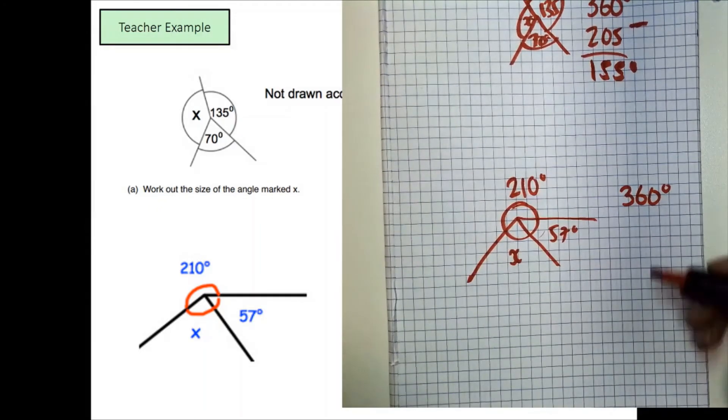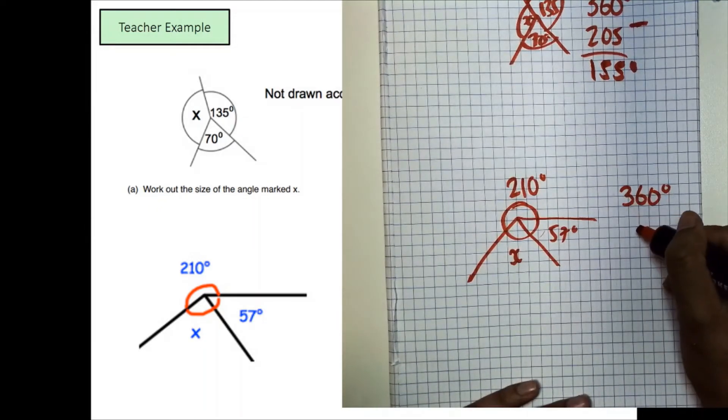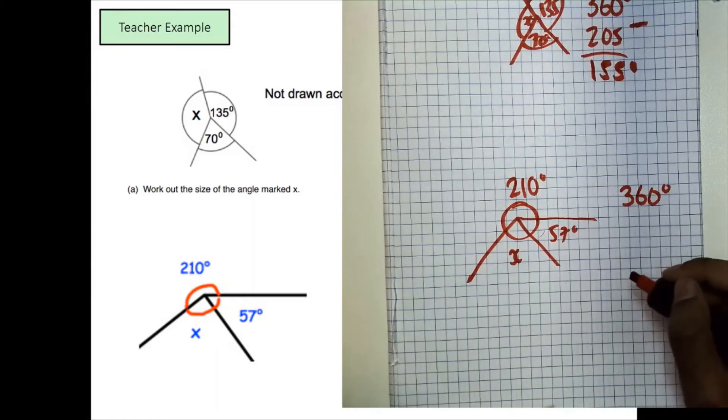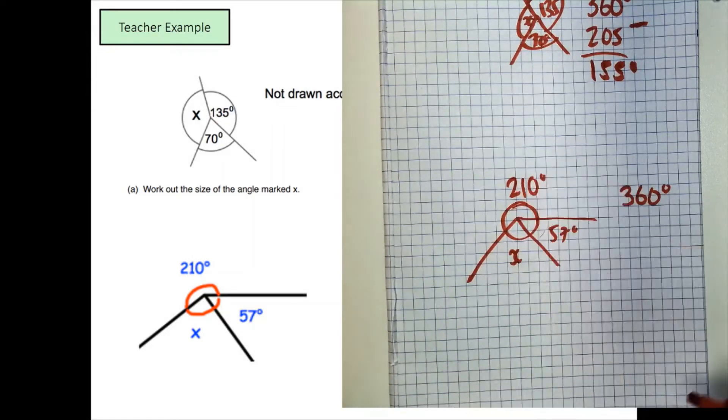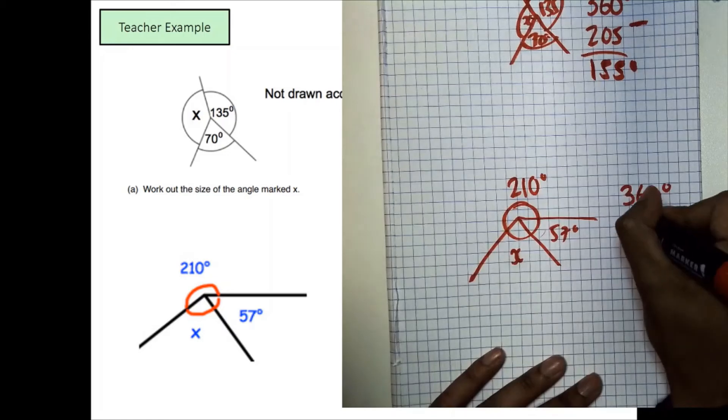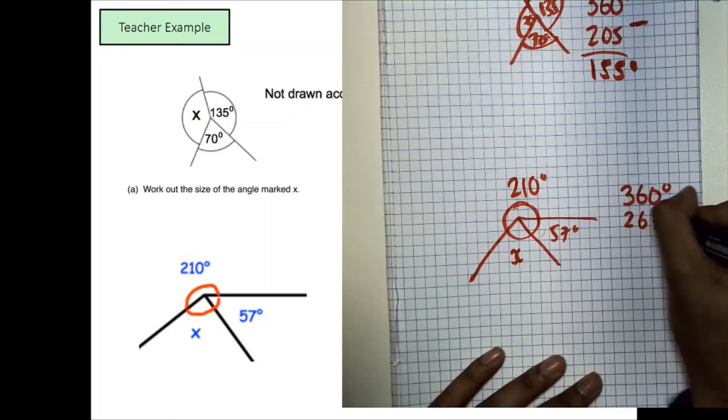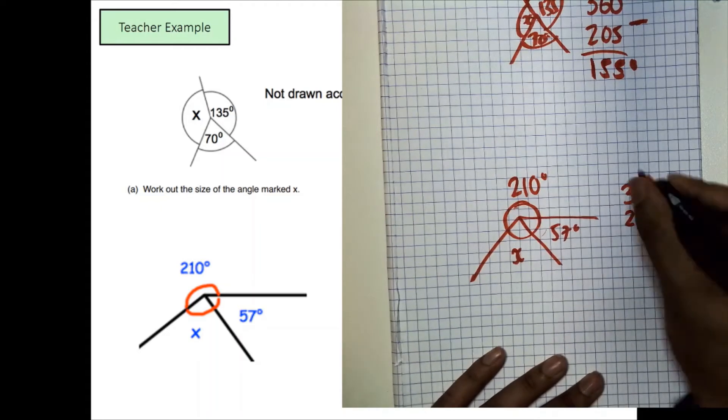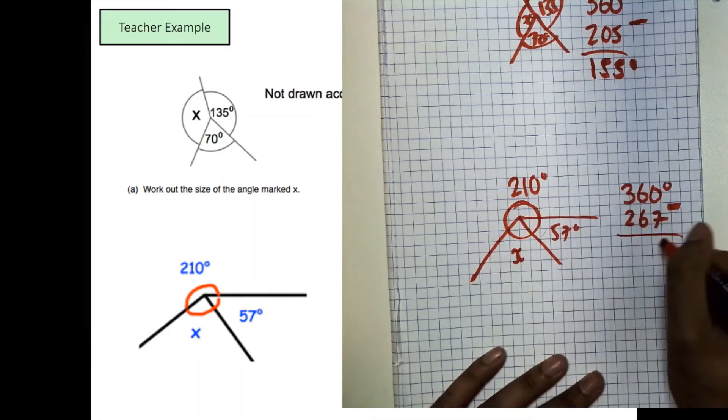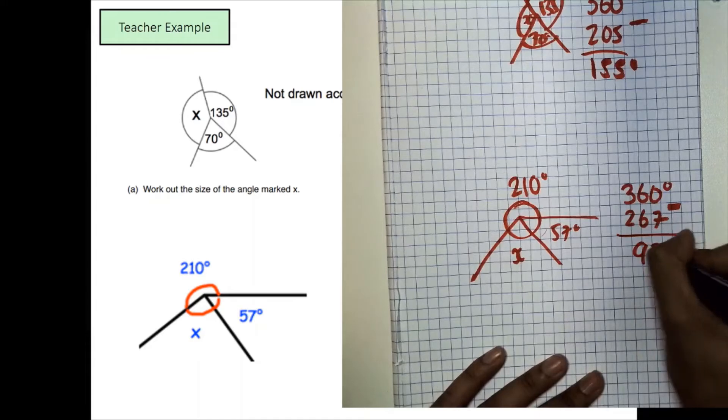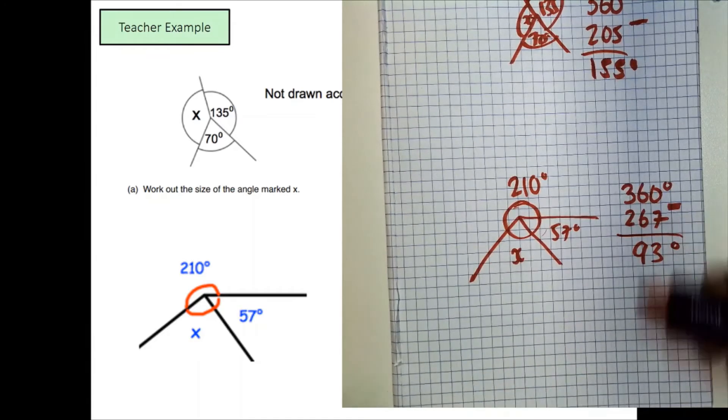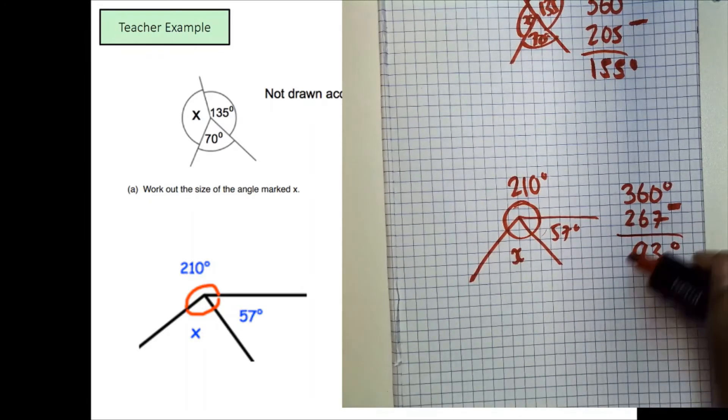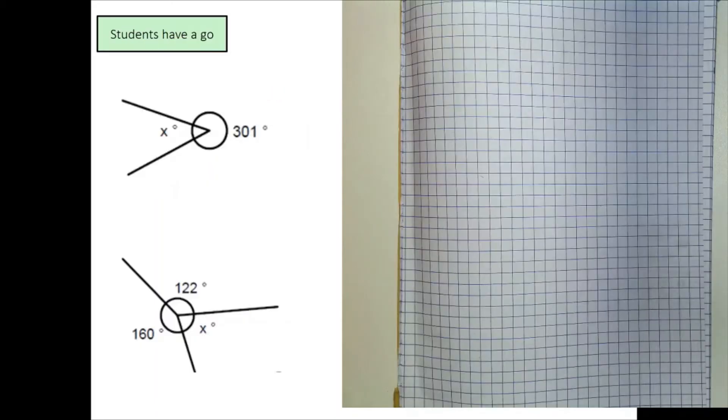Now once again, you can do 360 take away 210 and whatever your answer is, take away 57. Or you can just do 210 add 57 which will be 267. And you can subtract this entire thing away from 360 and that would give you an answer of 93 degrees. Again, I expect you to know how to do your subtraction, which is why I'm going quickly through this.